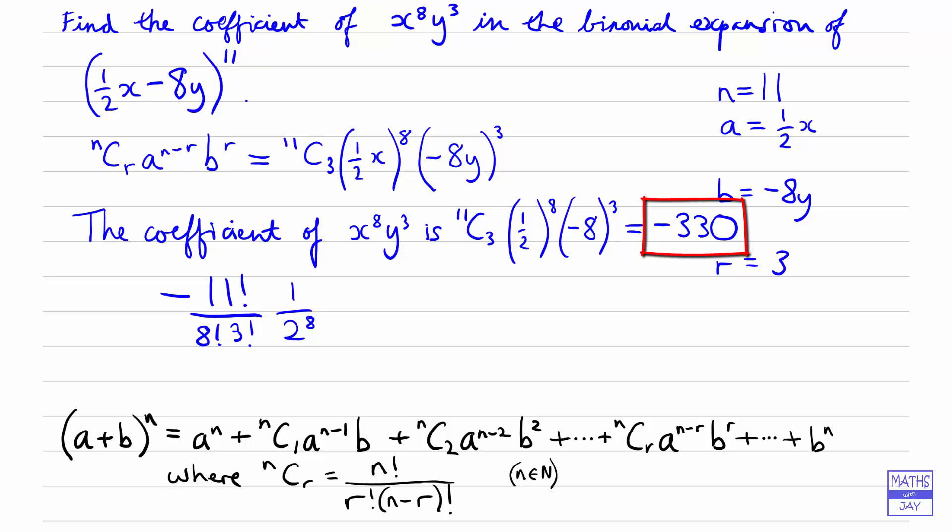And you could think of 8 as 2 cubed, so that would be 2 to the power of 9. So all those 2s would cancel with 8 of those, leaving us with a 2 there. Let's tidy it up a bit, so we've got minus 11 times 10 times 9 times 2 divided by 3 times 2 from the 3 factorial.